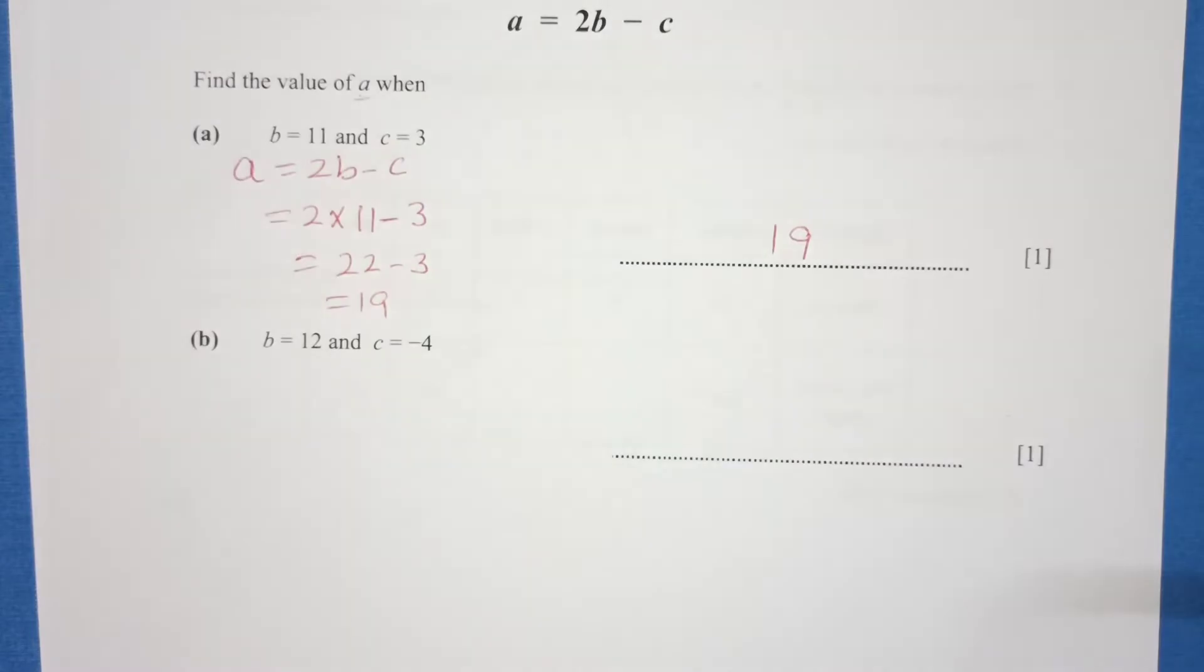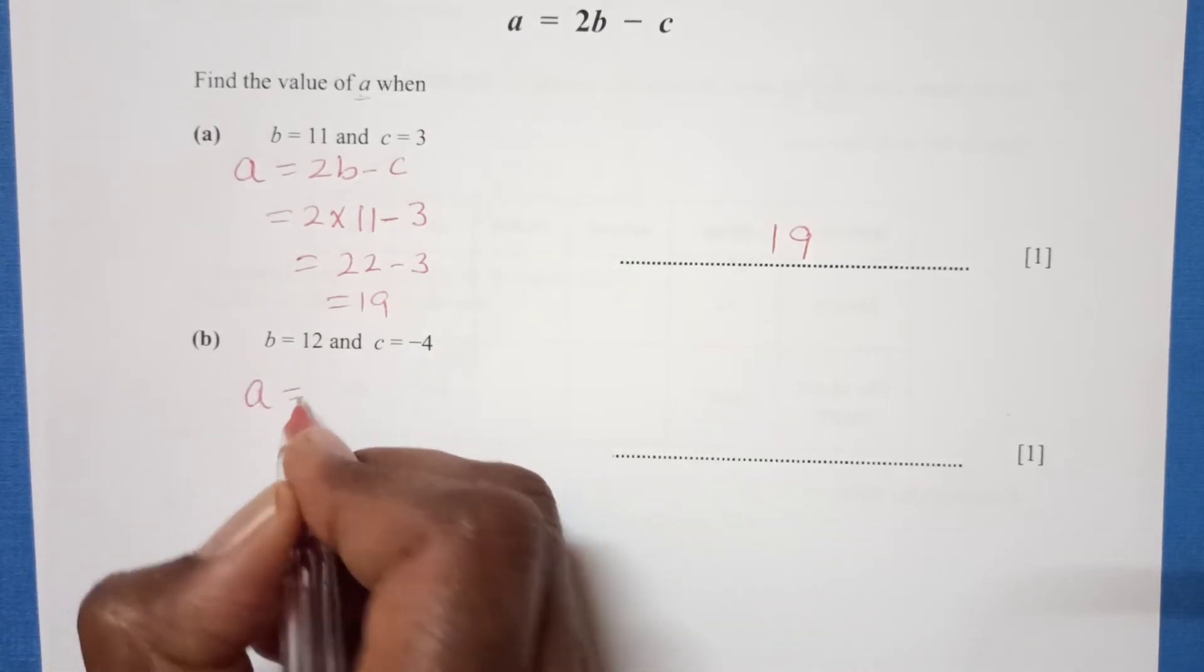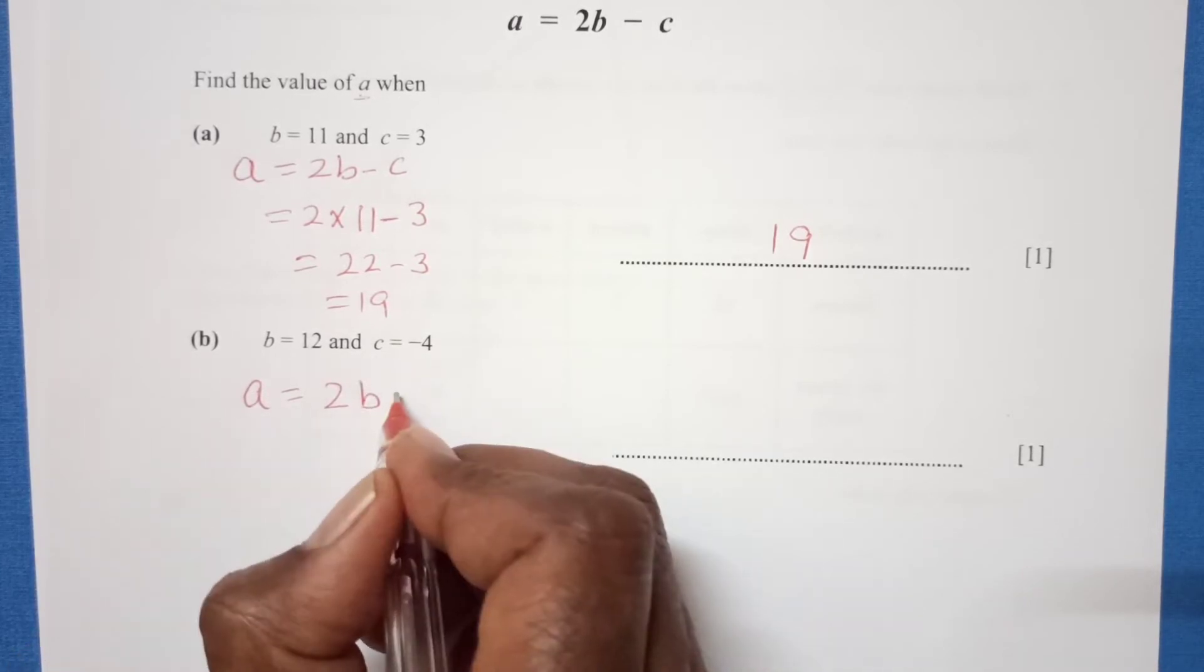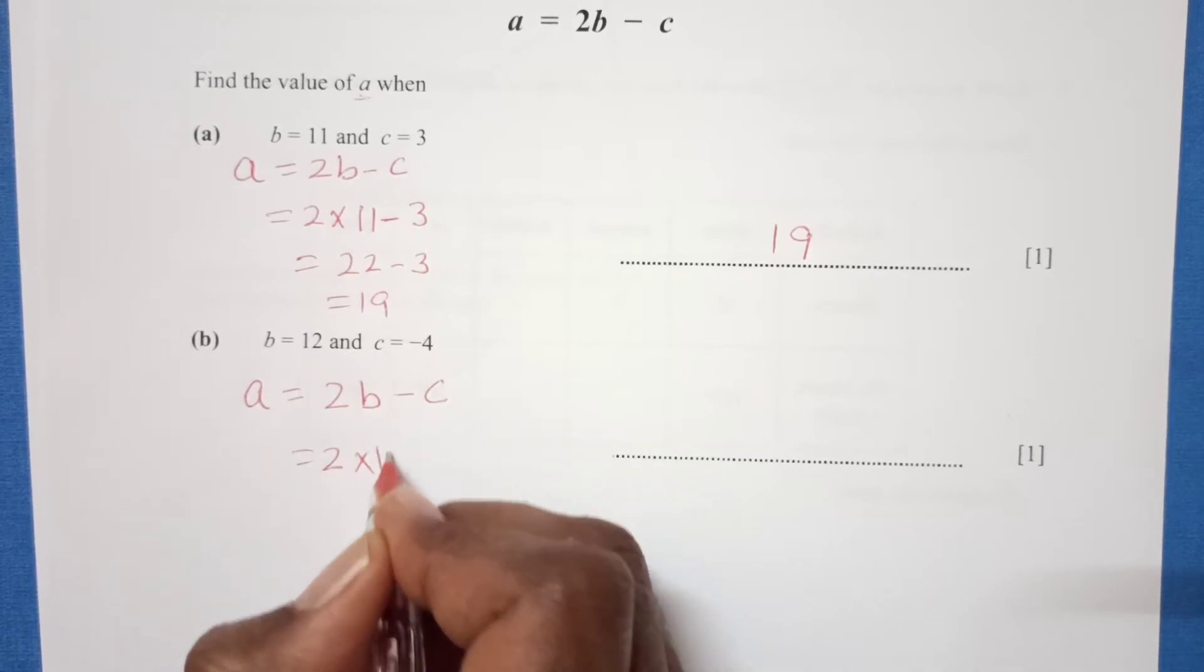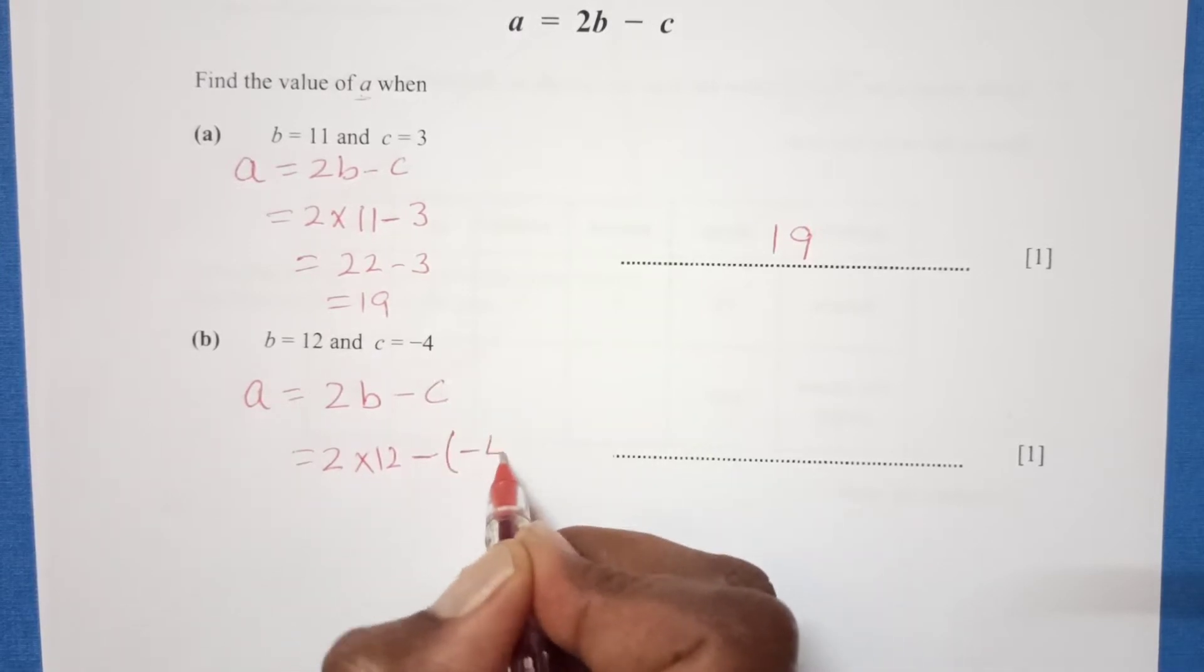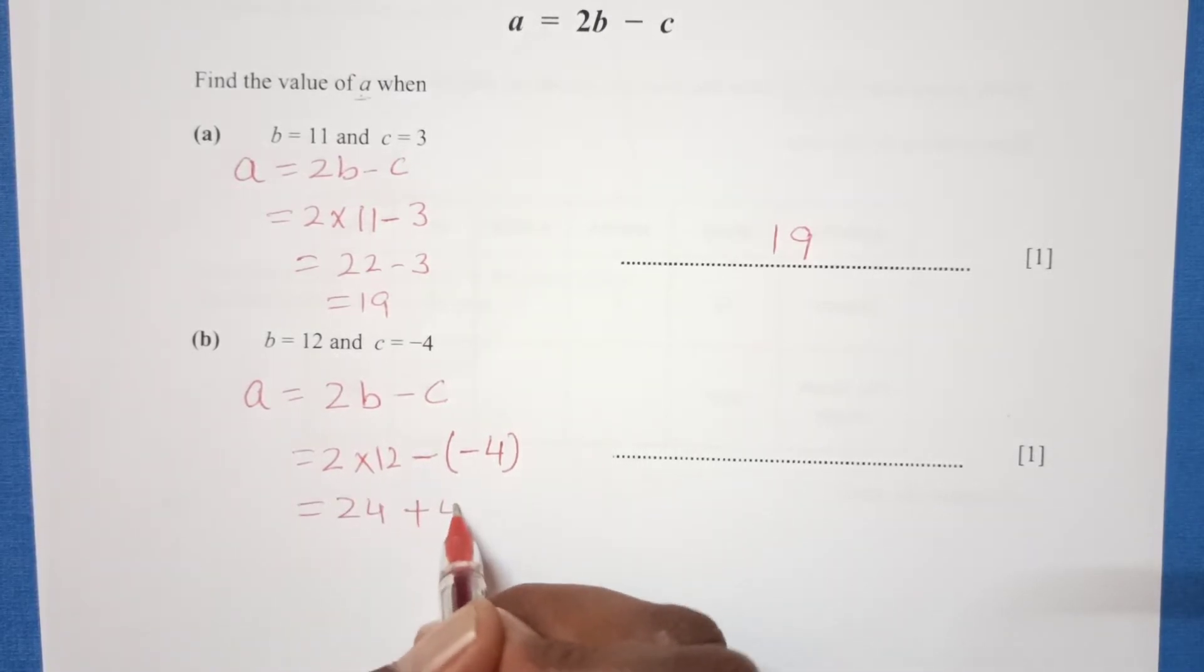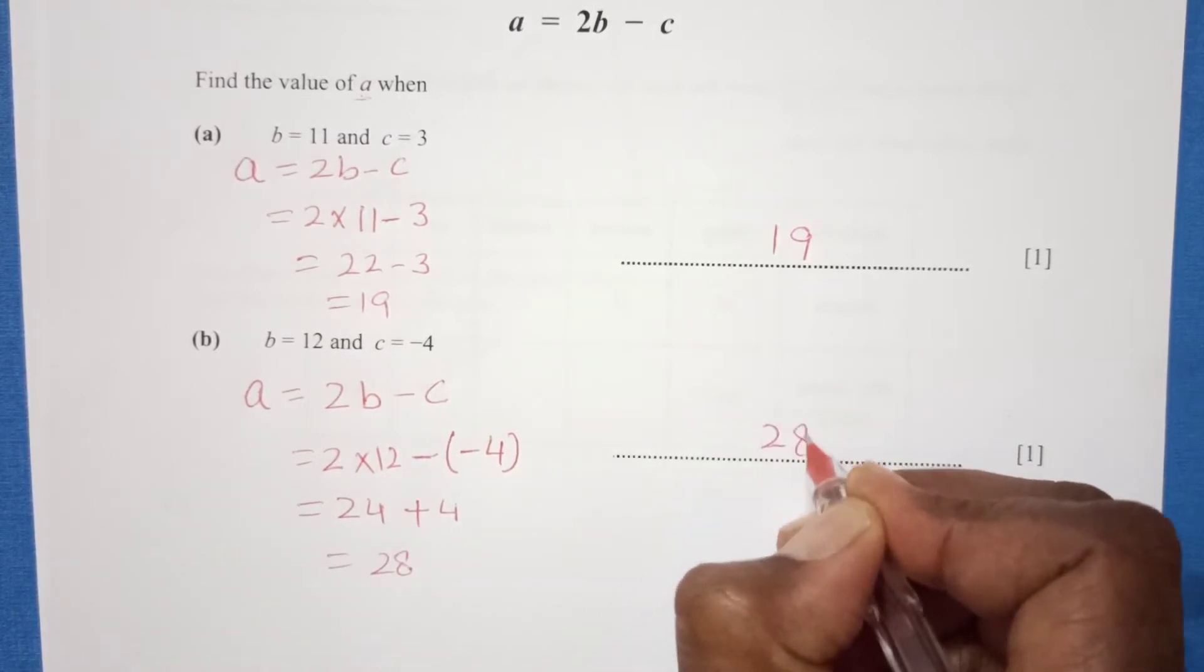Now again we are looking for value of a for different values of b and c. We have a equals 2b minus c. 2 times b, b is 12, minus c. C is negative, so we need to put bracket here. 2 times 12 is 24, negative and negative becomes positive, so 24 plus 4 is 28.